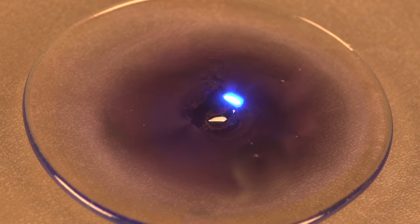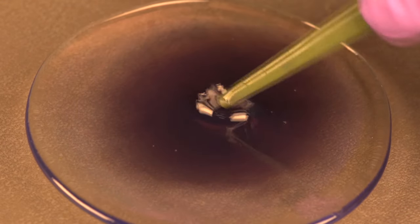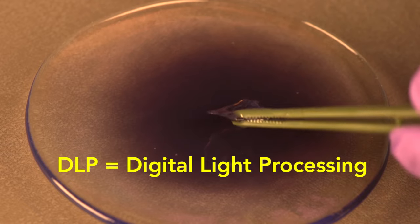It's called curing. What I'm doing with this laser pointer is pretty crude, so to aim light precisely, this printer uses a DLP projector. DLP stands for Digital Light Processing.